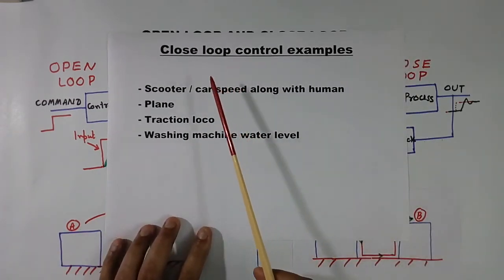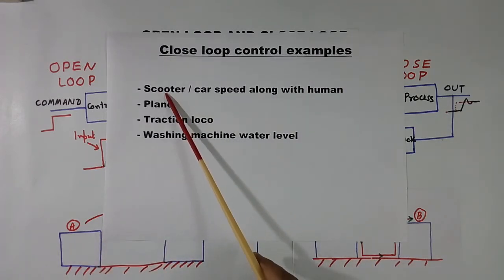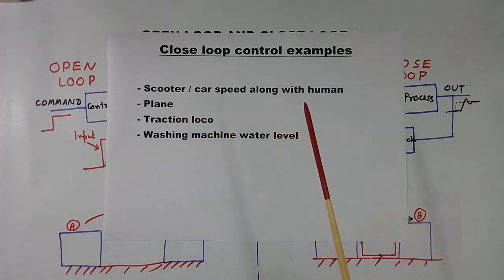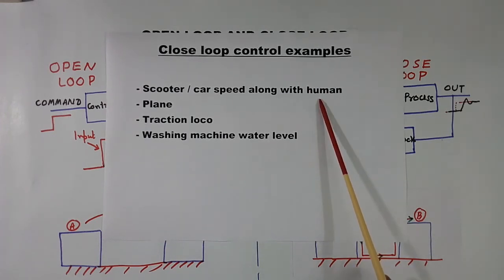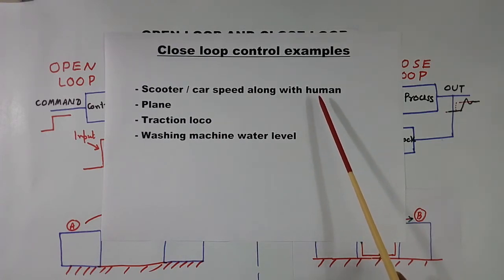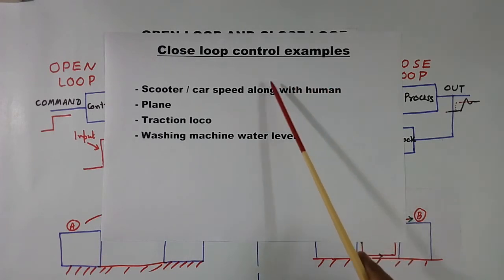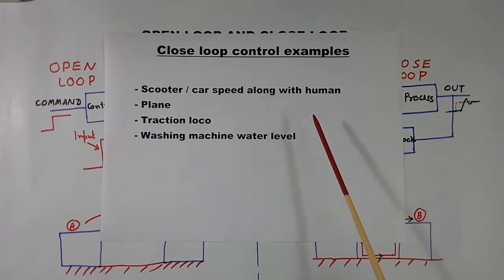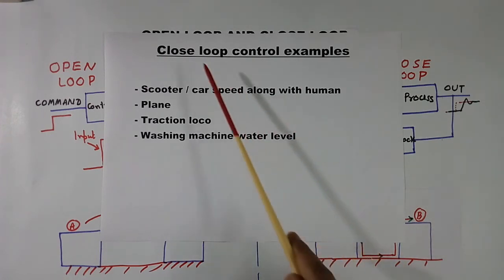Now this is closed loop control examples. Scooter car is along with human. What happens when you press the accelerator, car will run. Now suppose some hill comes, car speed will reduce. So our human eyes, or human body works like feedback, closed loop control system. Our eye will sense, or our body, or whatever we say, will sense that speed is reducing. We feel like speed is reducing. Based on that, we increase the speed. So human behaves like feedback. And human along with scooter is a closed loop control system. And whether it is hill, whether it is downward or upward road, we try to keep the speed constant. So it is closed loop control system.